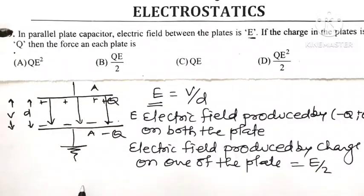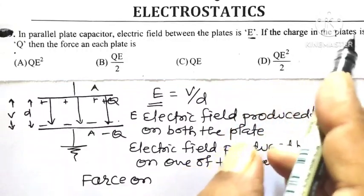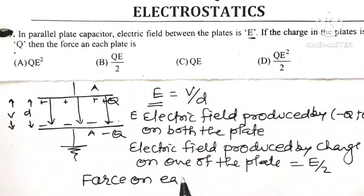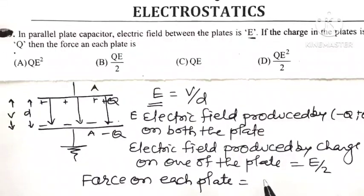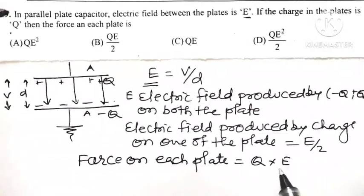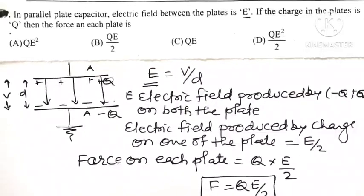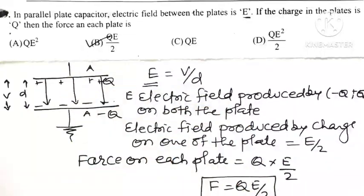The force on each plate is equal to the charge on that plate multiplied by the electric field produced by the other plate, which is E divided by 2. So F equals Q into E divided by 2, that is F equals QE divided by 2. Out of the four options, option B is the correct answer for this question.